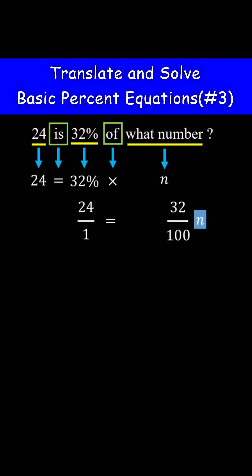Now, to solve for n, multiply both sides of the equation by the reciprocal of 32 over 100, which is 100 over 32. On the right side of the equation, we can cancel the 100, we can cancel the 32, and we are left with n.